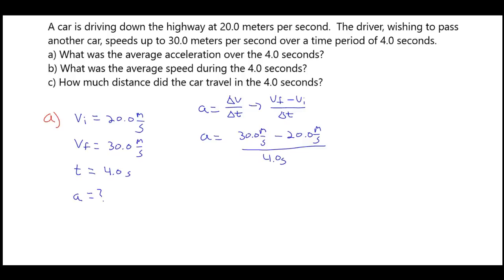So in this case, we plugged in for our final velocity, 30 meters per second. We plugged in for our initial velocity, 20 meters per second. And this all occurred over a time interval of 4.0 seconds. So what we end up with is a change in velocity of 10 meters per second over 4.0 seconds. That gives us a value of 2.5 meters per second squared.